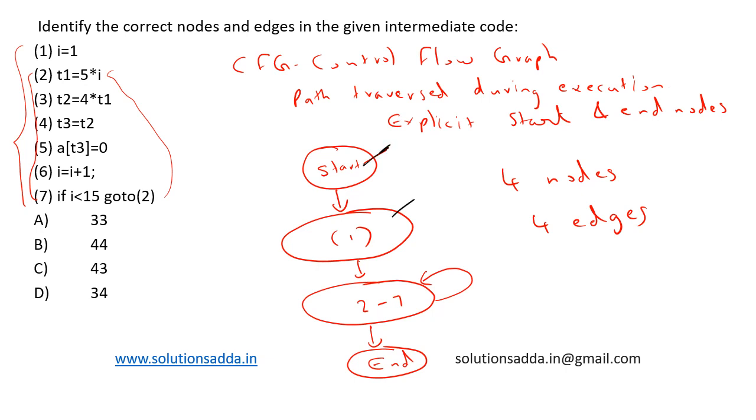One, two, three, and four nodes—four nodes. And one, two, three, four—four edges. So four nodes and four edges. Option B (four, four) is the correct answer.